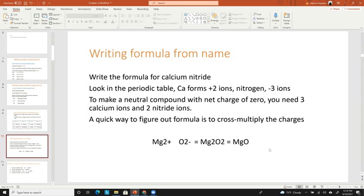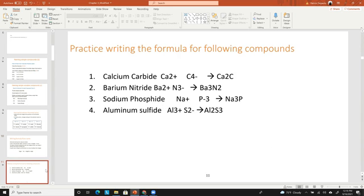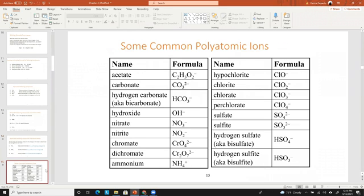The polyatomic ions are a group of ions that you have to know their names and their charges and the formulas. They are common oxygen in basically a group of atoms that have one charge. Most of them have an oxygen in them.